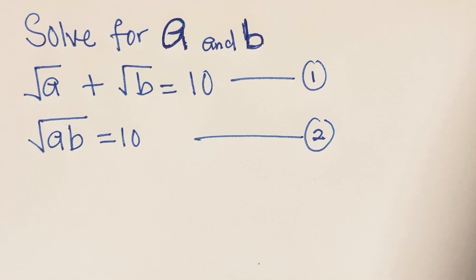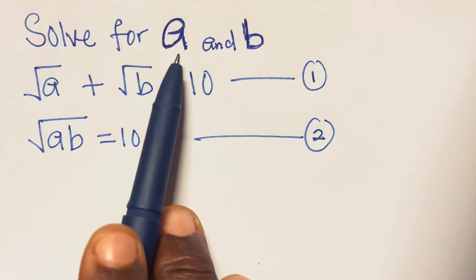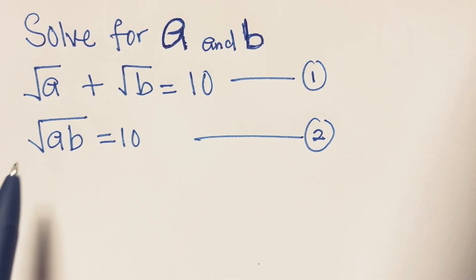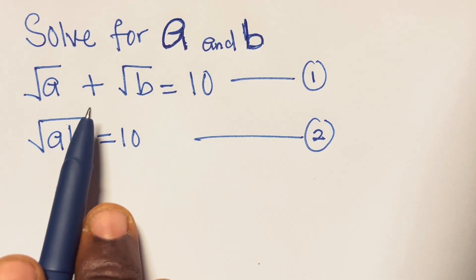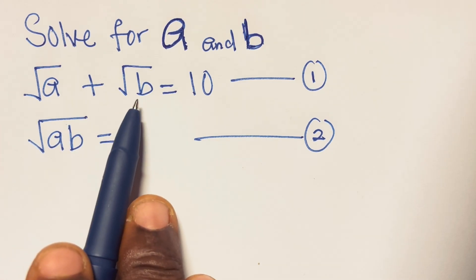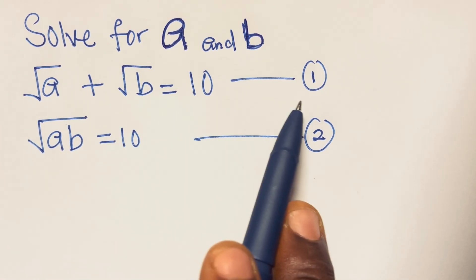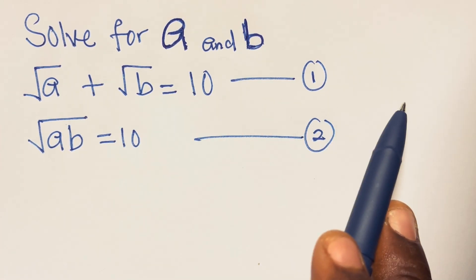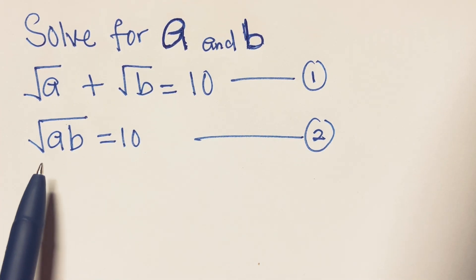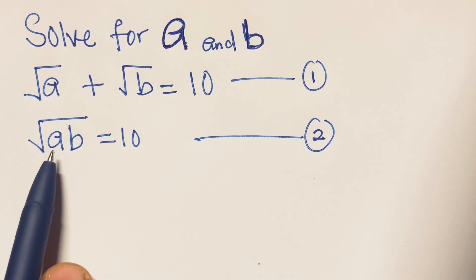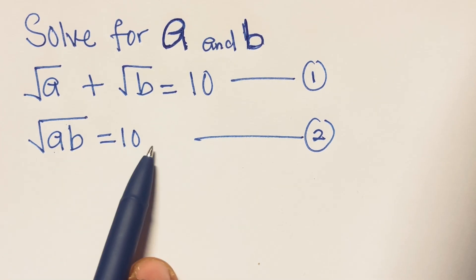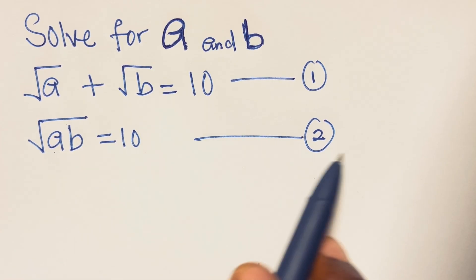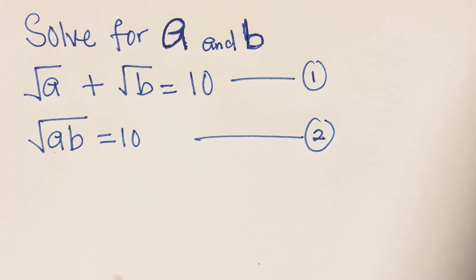Hi, welcome to mathematics. In this video we want to solve for a and b. We have: square root of a plus square root of b equals 10 — that's equation 1 — and square root of the product of a multiplied by b equals 10 — that's equation 2.